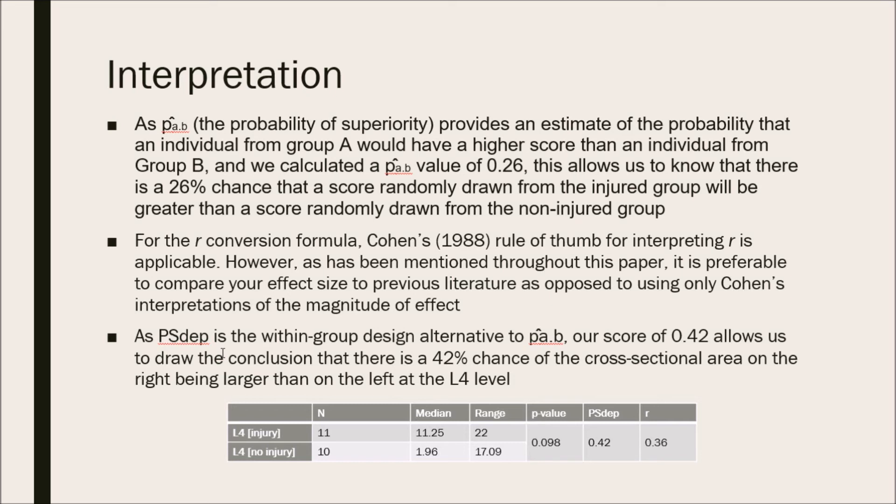Using the r conversion formula, Cohen's 1988 rule of thumb for interpreting r is still applicable. To see the interpretation for that, watch part 2 of this tutorial series. However, as we mentioned throughout the series, it is preferable to compare your effect sizes to previous literature, as opposed to using only Cohen's rule of thumb for interpretations of magnitude of effect.